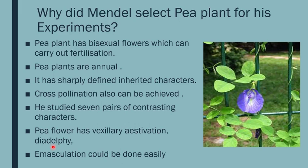Emasculation could be done easily. Emasculation is the removal of anthers — cutting of anthers before anthesis, before formation of pollen grains. So emasculation could be easily done, which benefited hybridization.